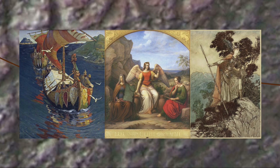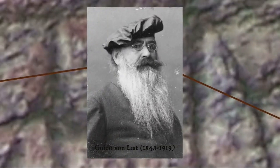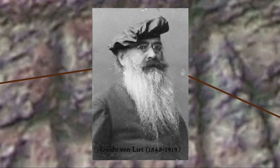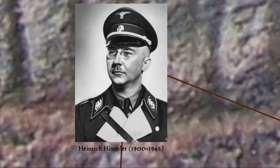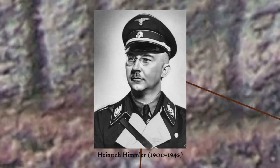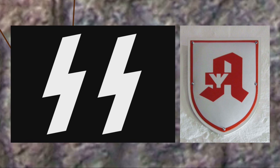Furthermore, the runes fed into the esoteric and occultist fascination of figures such as Austrian mysticist Guido von List, who developed the Armanen runes, and inspired by him Karl Maria Wiligut, who developed his own version of the runes in the 20th century. This was exactly the sort of thing that caught the interest of the Nazi occultists, particularly Heinrich Himmler, who incorporated these runes into various Nazi insignia — most famously the insignia of the Schutzstaffel, the so-called SS.